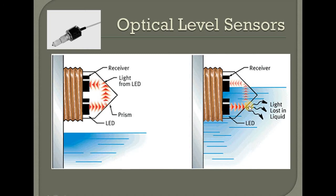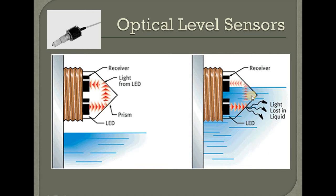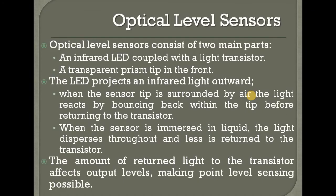When liquid is high, the LED light is reflected. The light is lost in the liquid — it doesn't make the receiver correct. The light does not reach the receiver clearly. The air-liquid interface is used in this mechanism. Optical level sensors will be used in this mechanism.